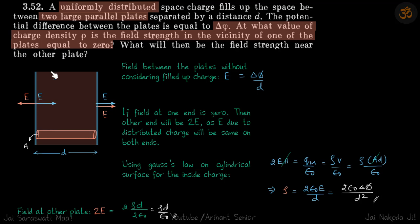Correct. The potential difference is delta phi, gap between them is D, so electric field is delta phi by D. Now field at one end is zero, then other end will be 2E as E due to distributed charge will be same on both ends.